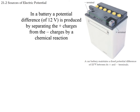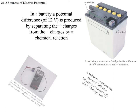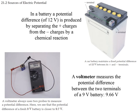The chemical reactions push positive charges to one side and negative charges to the other. If we have one of those square 9-volt batteries, there is a 9-volt difference between the two sides. If we connect it to a voltmeter, it will read around nine volts — the actual value depends on the circuit it is connected to.